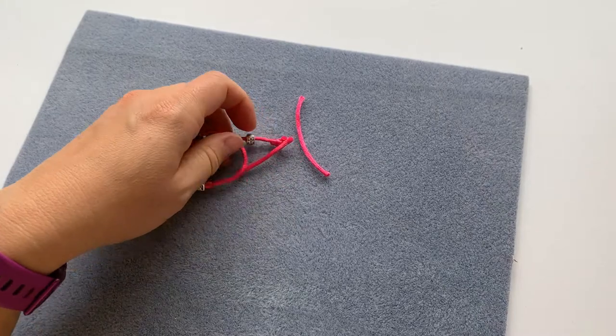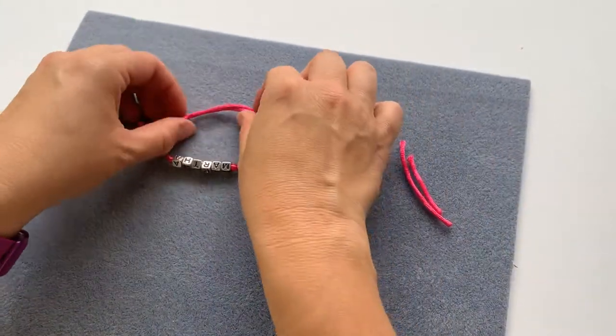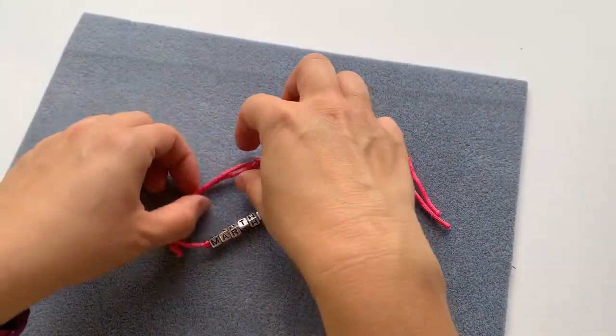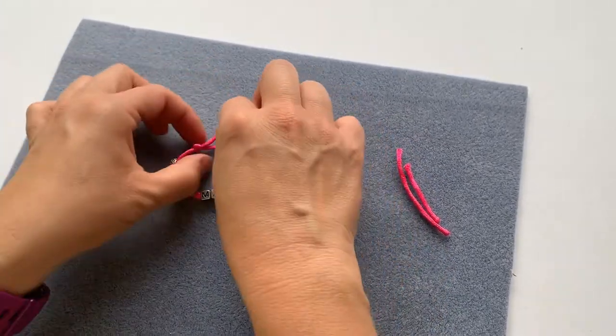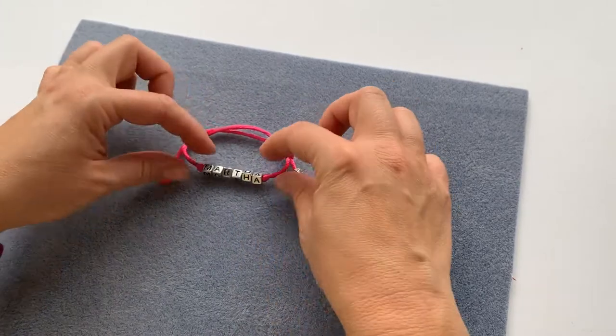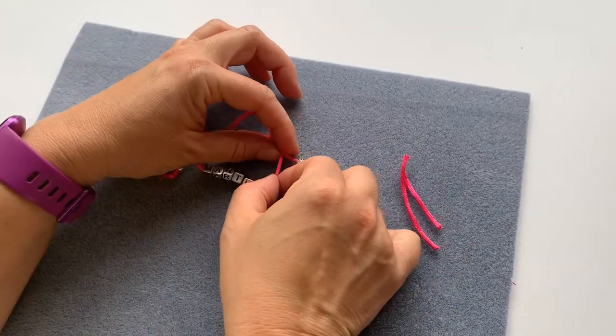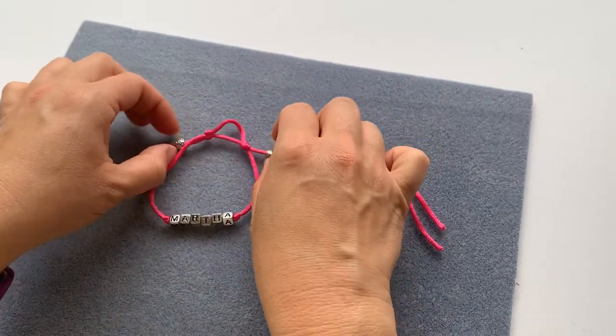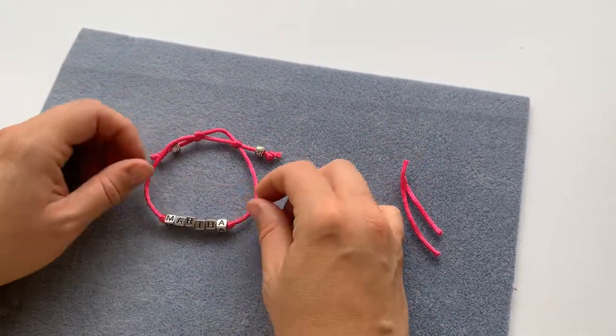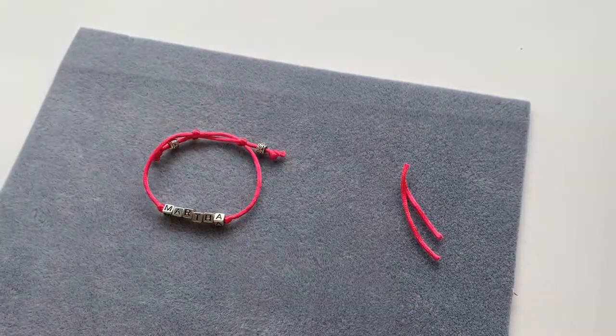So that's one and that's two. So move those bits away and there you have your sliding knot bracelet. So to adjust, you can just pull these cords to make it smaller and then open them up again to fit it onto your hand. And that's it.